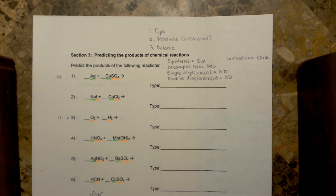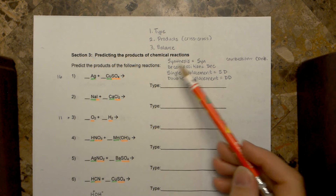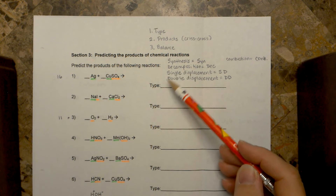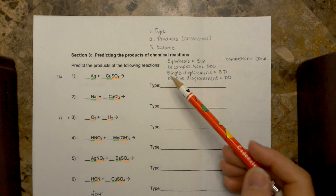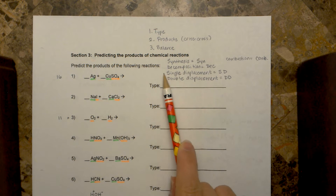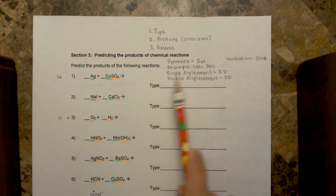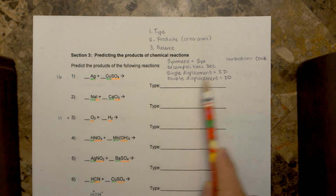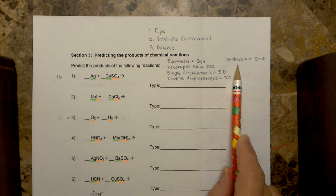There are five basic kinds of reactions — there's more than that, but we're just going to talk about these: synthesis or combination reactions, decomposition, single replacement, double displacement or replacement, and combustion.